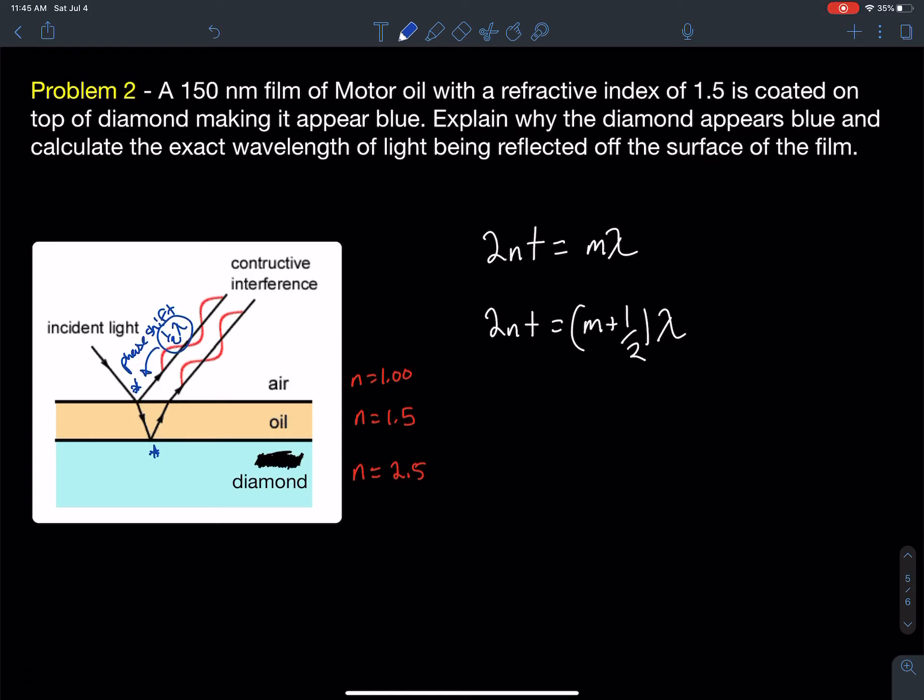Right there. And on the bottom, I'm also going from 1.5 to 2.5, so that would also be a phase shift. I'm going from low to high, so I would have also a one-half wavelength phase shift down at the bottom.